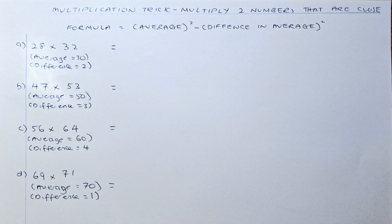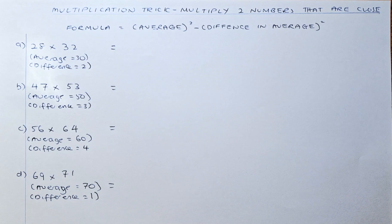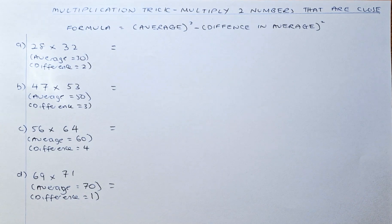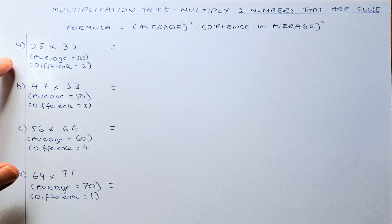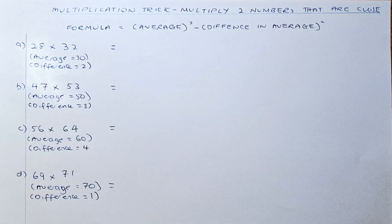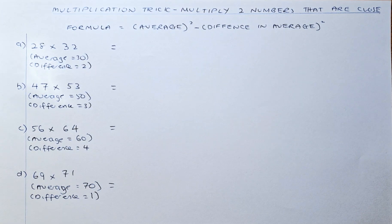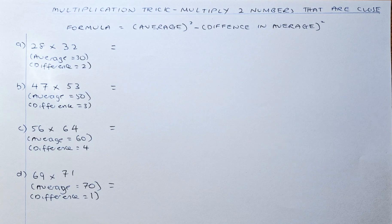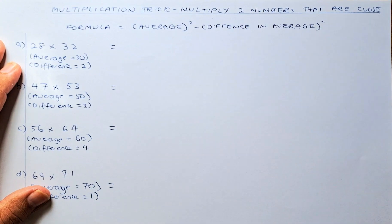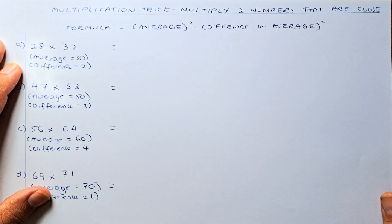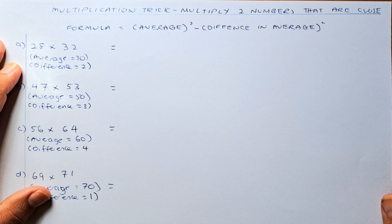let's do the first example: 28 times 32. The average is 30. To find the difference, since the average is 30, 32 is 2 more than 30 and 28 is 2 less than 30. Once you know this, you can use this formula.